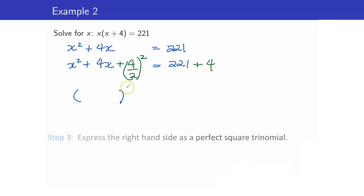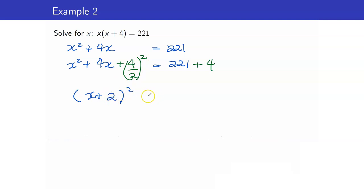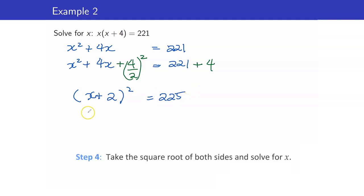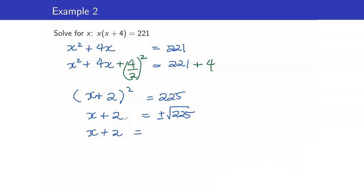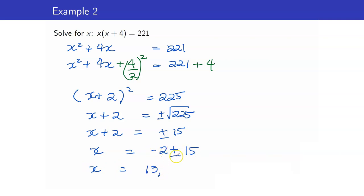This is now the square of x plus 2, since the sign is plus and 4 divided by 2 is 2. The right-hand side is 225. By the square root property, x plus 2 equals plus or minus square root of 225, which equals plus or minus 15. Transposing, x equals negative 2 plus or minus 15. For the plus: negative 2 plus 15 is 13. For the minus: negative 2 minus 15 is negative 17. These two are your solutions.